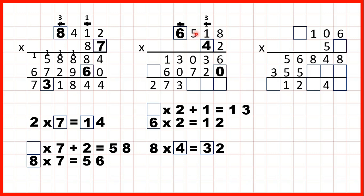Now, 5 times 4 is 20, so that's 2, 0. And now 6 times 4 is 24, plus 2 is 26. Now, adding up our answer lines: 6 plus 0 is 6, 3 plus 2 is 5, 0 plus 7 is 7. And to check that we've not made any mistakes, let's just keep going. 3 plus 0 is 3, 1 plus 6 is 7, and nothing plus 2 is 2.